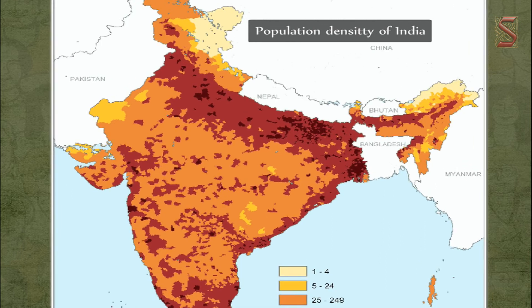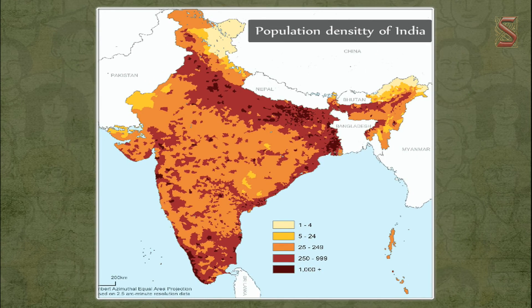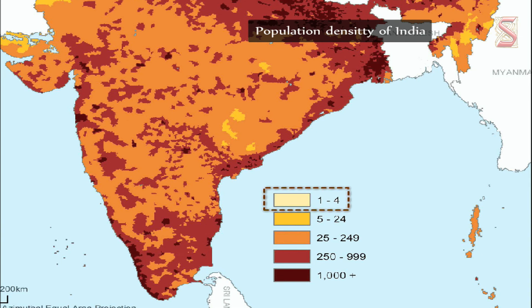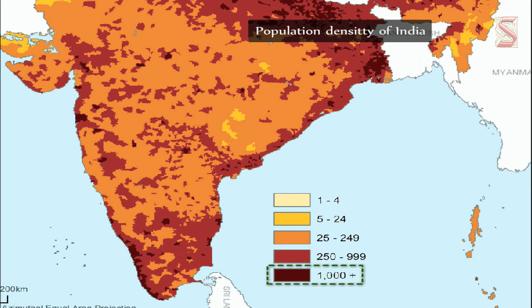There is significant variation in population density across India. To understand these variations, one must consider the history, terrain, and climatic conditions of a region. A map showing population density at the district level reveals that some areas have densities of 1 to 4 persons per square kilometer, some have 250 to 999, and highly dense areas have more than 1000 persons per square kilometer.